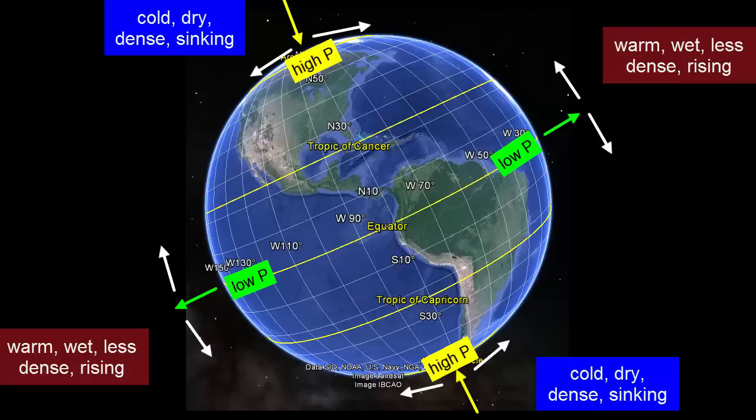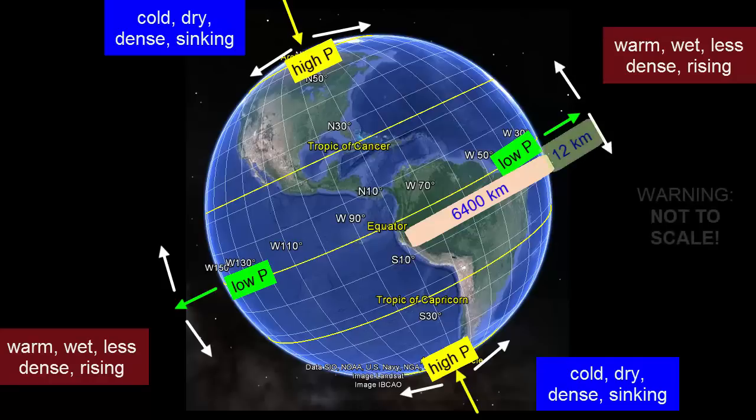However, their height is grossly exaggerated. Remember, the planet's radius is about 6400 kilometers. The troposphere is only 12 kilometers thick.